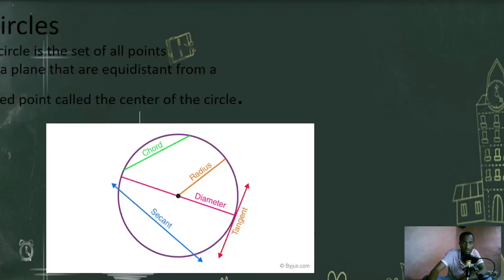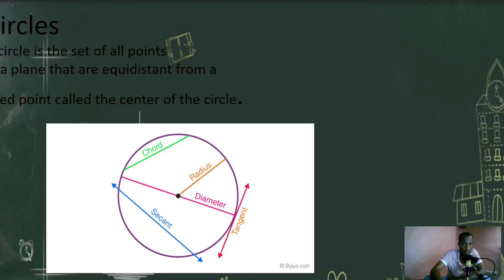And the other topic is about a circle. A circle is a set of all points in a plane that are equidistant from each point called the center of the circle. As you see here, we have radius, chord, diameter, tangent, secant — these are parts of the circle.